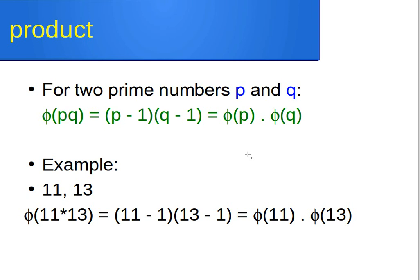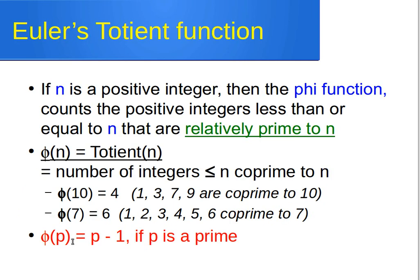Now some other interesting things about the phi function. If we have two prime numbers p and q — and this is at the core of the RSA algorithm — then phi(p × q) equals (p − 1)(q − 1), which is the same as phi(p) × phi(q). So phi(p × q) = (p − 1)(q − 1) = phi(p) × phi(q), where p and q are prime numbers.